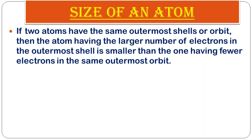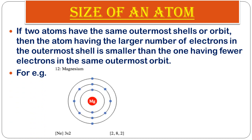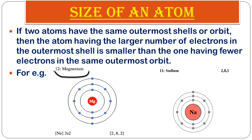However, if two atoms have the same number of outermost shells, the atom having the larger number of electrons in the outermost shell is actually smaller. For example, magnesium (atomic number 12) and sodium (atomic number 11) both have three electronic orbits.